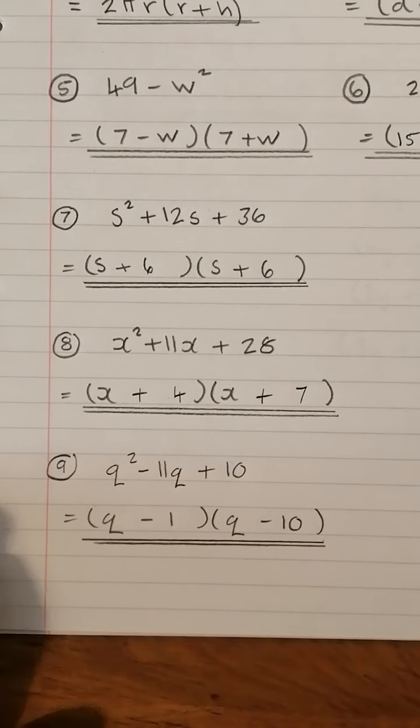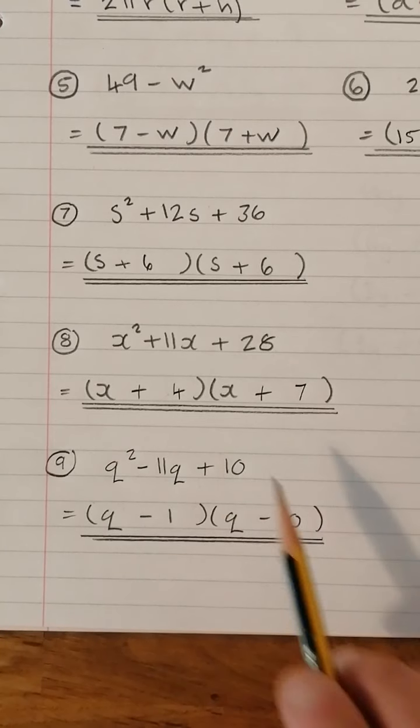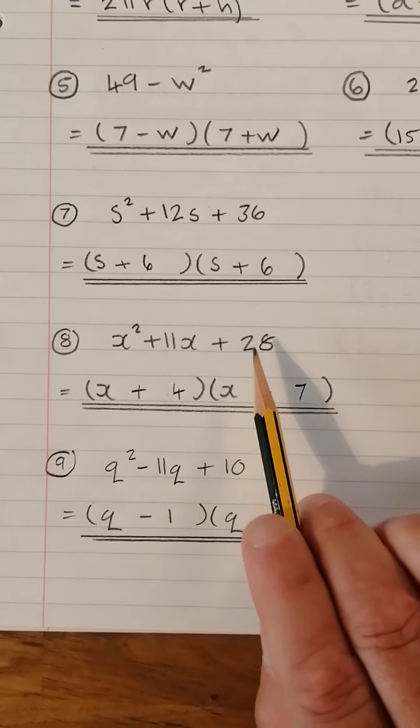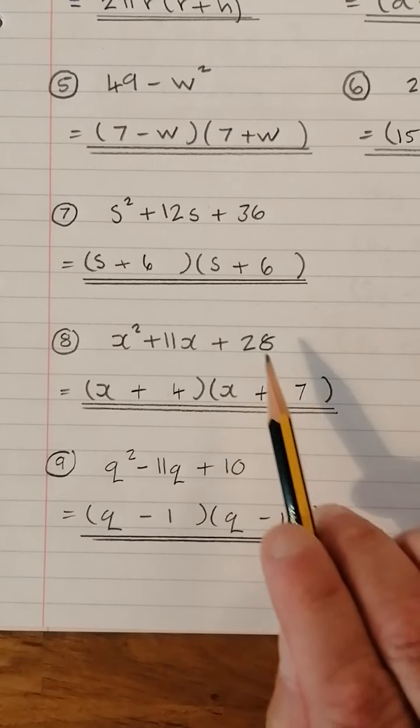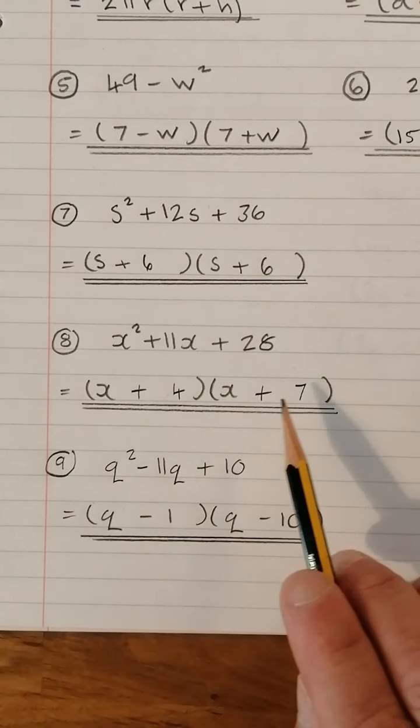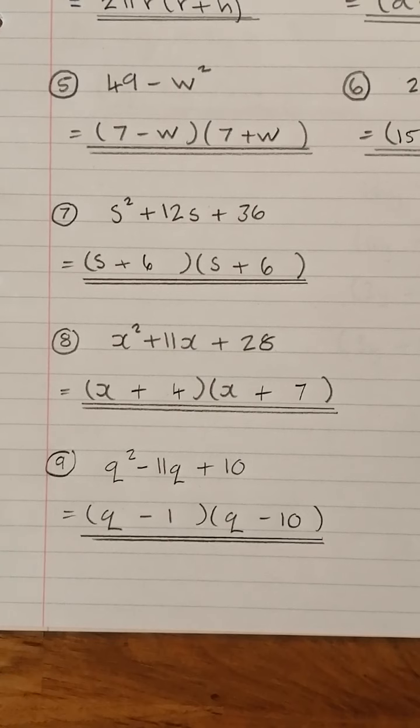Let's have a look at number 8. So we want two numbers that multiply to give 28, but add to give 11. 4×7 gives 28. +4 add 7 gives +11. And there we have it there, (X + 4) times (X + 7).